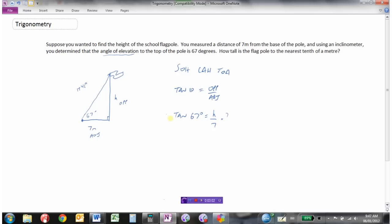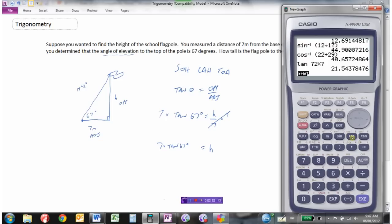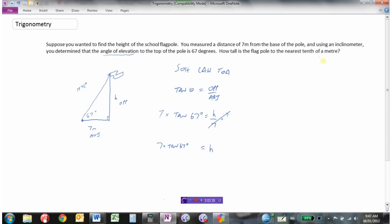We multiply by 7 to isolate h, and that gives us h equals 7 times tan 67 degrees. So 7 times tan 67 is about 16.5 because it wanted the height to the nearest tenth of a meter. So h equals 16.5 meters tall. So yeah, just doing some simple work on the ground and doing some trigonometry, we can calculate quite accurately the height of the flagpole.